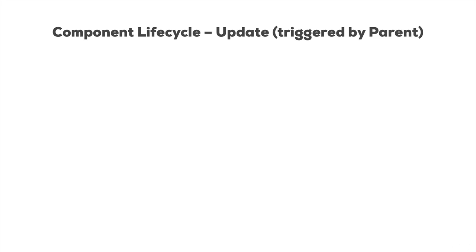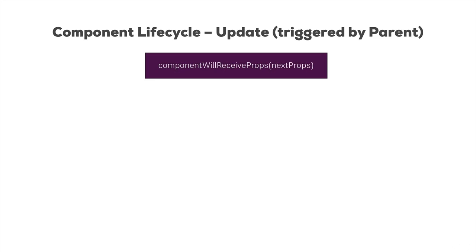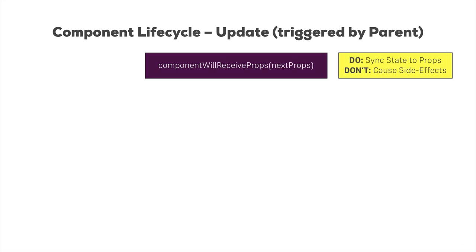The first method which then gets executed, if we implement it, is componentWillReceiveProps, and we get the upcoming props as an argument. One thing we can do in this method is synchronize our local state to the props — initialize the state with the props so we can later change the state but get the base state depending on the outer props. If you don't need to synchronize this, you probably don't need to implement this method. What you shouldn't do here is cause side effects — don't reach out to the web and fetch data, because this will lead to re-rendering and performance issues.